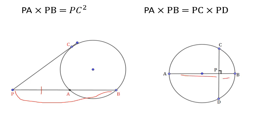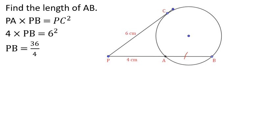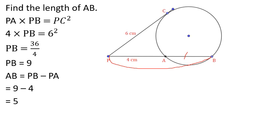We need to find the length of AB. We check: PA × PB equals PC squared. PA is 4 and PC is R. So R squared equals 36, and PB equals 36 divided by 4. That gives PB equal to 9. Then PA is 4, so the total length is found accordingly.